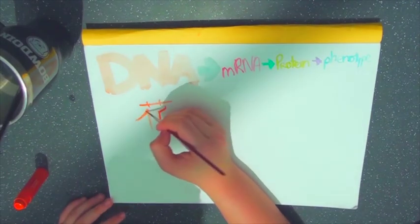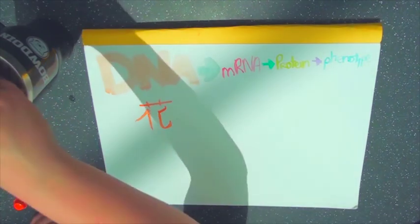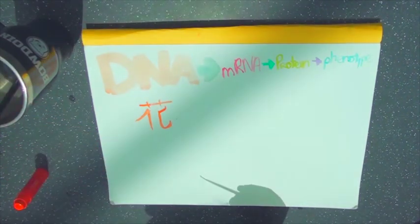We know that a certain piece of DNA is transcribed into mRNA in order to be translated into a protein. By expressing this protein, a certain phenotype is also expressed.